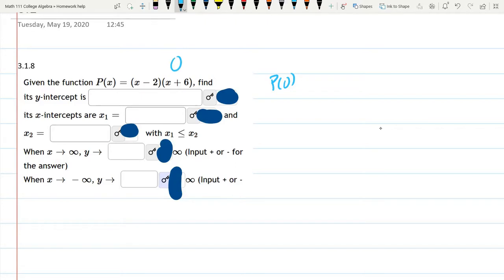Well, using the zero product property, we set this equal to 0, and then either x minus 2 equals 0, or x plus 6 equals 0. Solve both of those for x—add 2 to both sides, or subtract 6—and there you go.